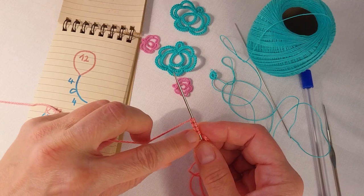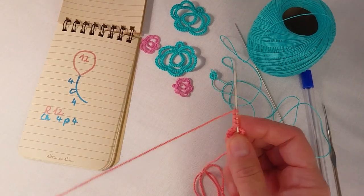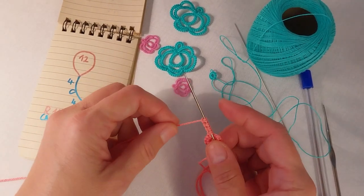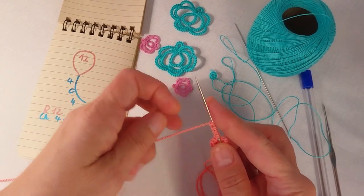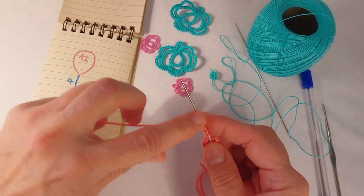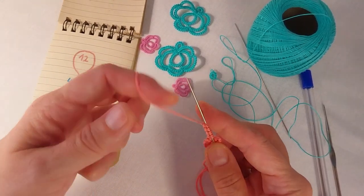If you don't know how to make double stitches please check out my previous video about double stitches. And we have to make a picot so we just have to leave some space between the two stitches.